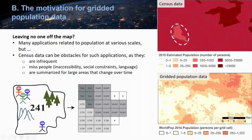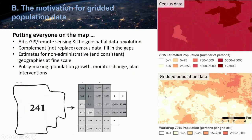Here, the white oval shows a census unit for which we have to assume that population density is equal everywhere, because we only have one population count for this large area. What we would really want for many applications is a much finer and more nuanced population distribution, as shown here in the WorldPop 2014 example. The big question is how we can rasterize or grid traditional census data into these kinds of gridded population surfaces.